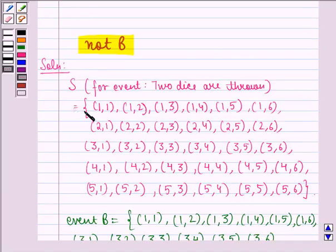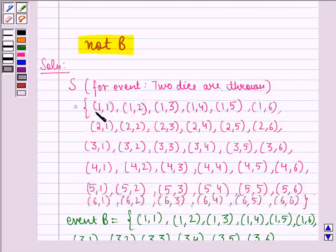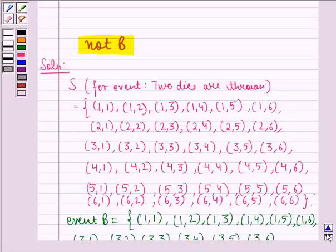So we see that this is the sample space for the event when two dice are thrown. So this is what we have. Now this (1,1), (1,2) and so on till (1,6), (2,1), (2,2) till (2,6), then we have (5,1), (5,2) till (5,6) and (6,1), (6,2) till (6,6).